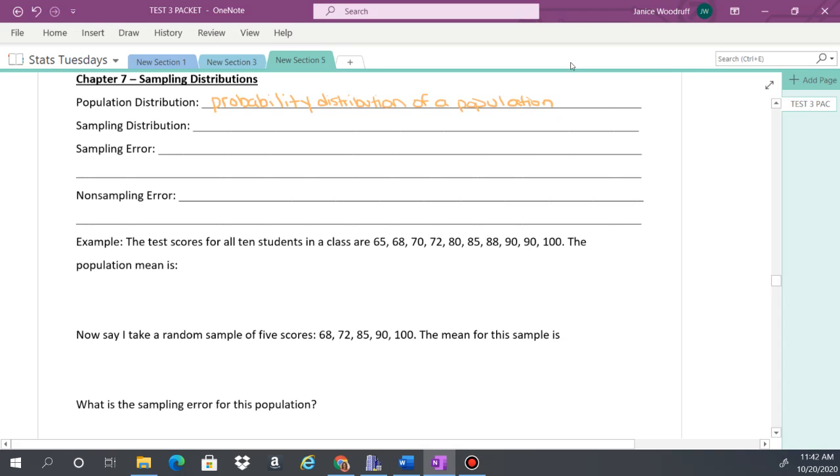And if we go all the way back to chapter 1, population means all. So if you see that in the context of the question, then you're dealing with a population. Whereas a sampling distribution is the probability distribution of a sample. So if it doesn't say all, then we're going to assume it's a sample, and that is x bar.